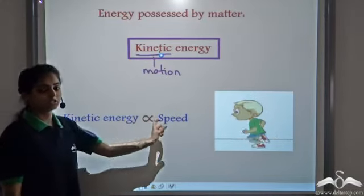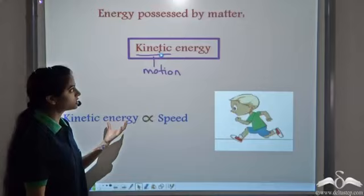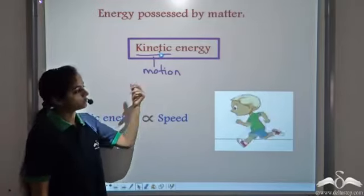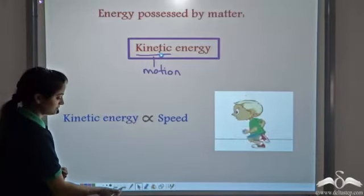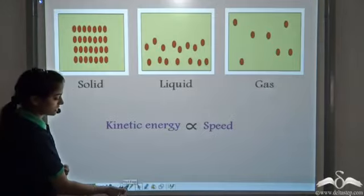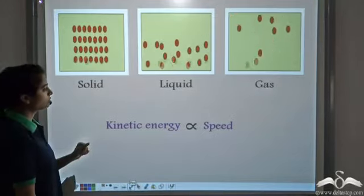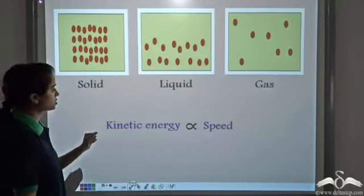So this kinetic energy is related to speed and this is the energy which is possessed by matter due to its motion. Let's see what happens in the three forms: solid, liquid, and gaseous state.